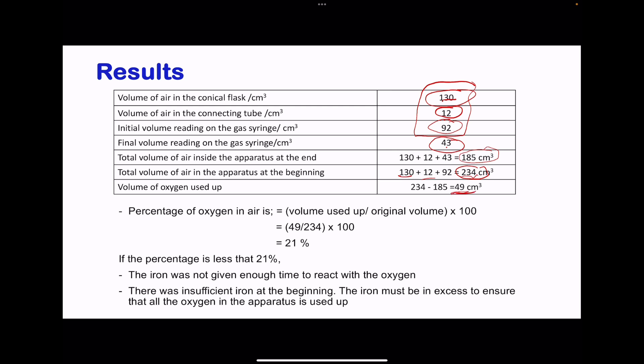So 49 centimeters cubed of oxygen has been used up from the 234 centimeters cubed of air that was contained in the whole apparatus. The percentage of oxygen in the air is going to be 49 divided by the total, which is 234, times 100, giving us 21%. And again, here we're showing the percentage of oxygen in the air is approximately 21%.